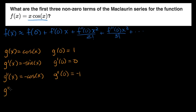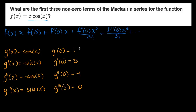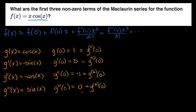You might start seeing a pattern. The third derivative equals sine of x, so the third derivative evaluated at zero is zero again. Then the fourth derivative brings us back to cosine of x — the fourth derivative is the same as the function. So the fourth derivative evaluated at zero is one. The pattern cycles: the fifth, sixth, and seventh derivatives evaluated at zero follow the same repeating cycle.